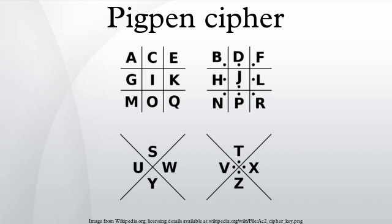The cover of the Outfield's 1989 album, Voices of Babylon, is written in a Pigpen cipher similar to the version shown to the right, as are the song titles in the album's liner notes.